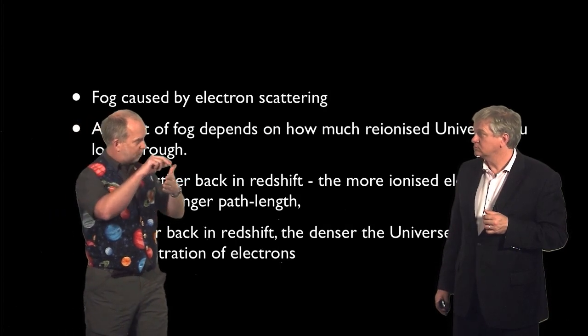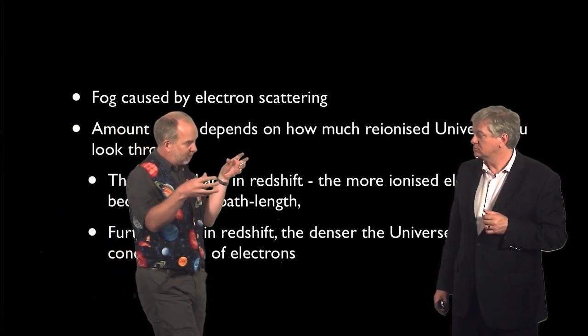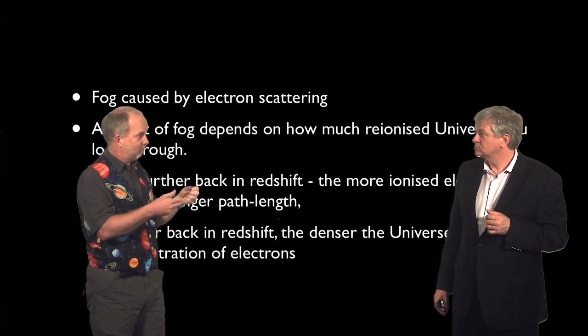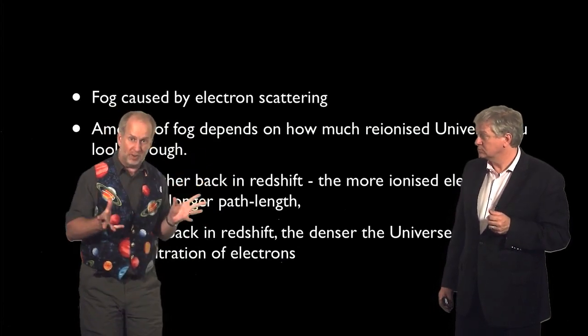But you've got to imagine a microwave background photon flying through. It starts off with a neutral gas, so it's transparent. And then as time goes on, space is getting bigger and bigger. And then at some point, it becomes ionized, presumably by these, whatever these mysterious ultraviolet sources are.